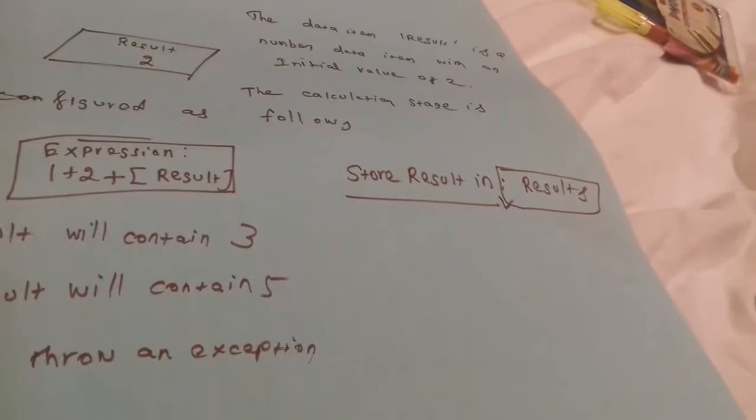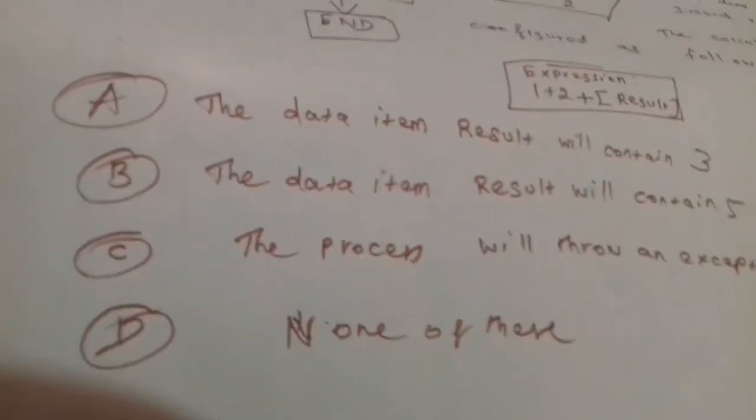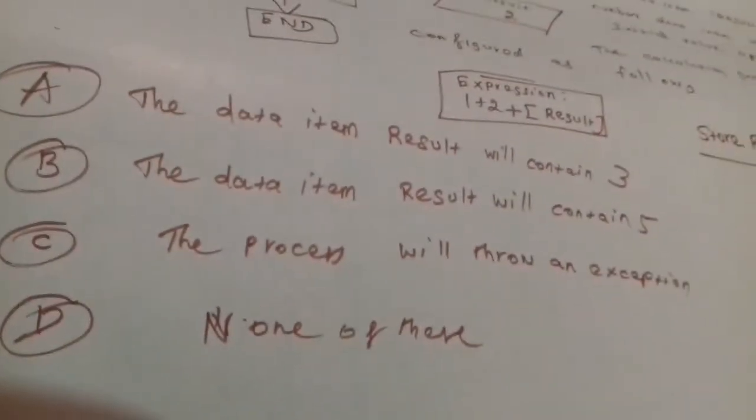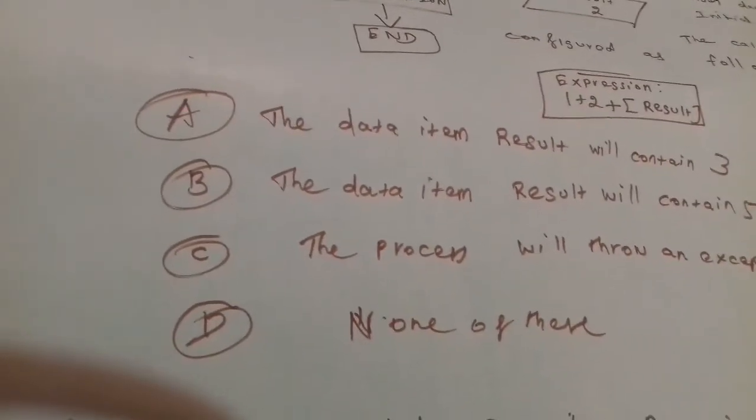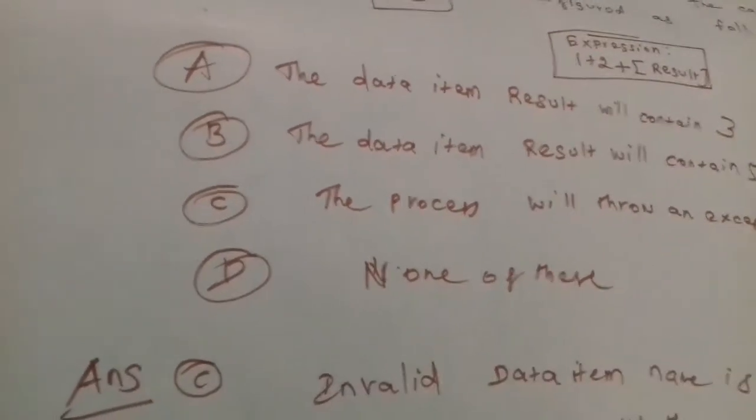The data item is 2, and it has to store result in 'results'. Option C: the process will throw an exception. The correct answer would be C.